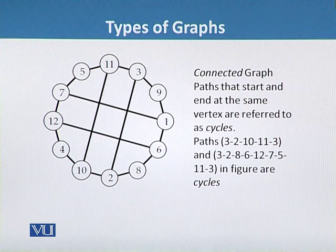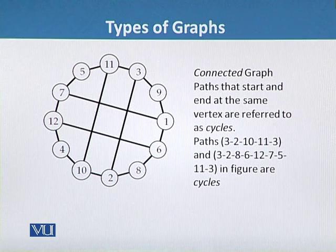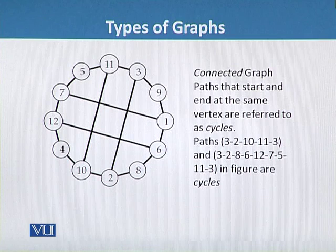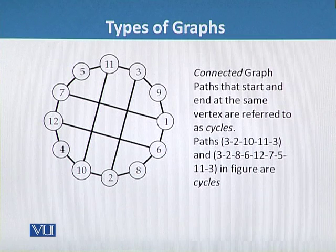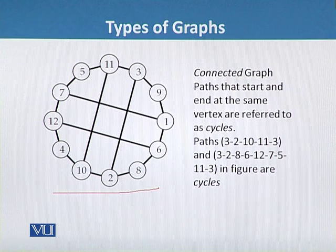The second type is the connected graph. A graph is called connected if all pairs of vertices can be connected by a path, which is a continuous sequence of edges where each successive edge begins where the previous one left off. In this cyclic graph, we can see that there are many cyclic paths present.